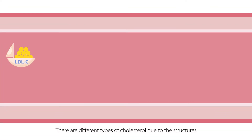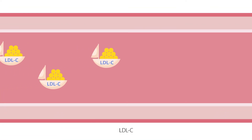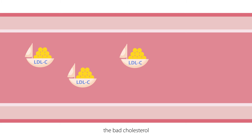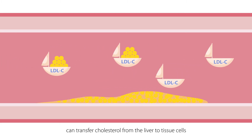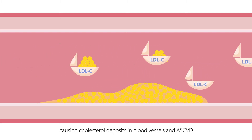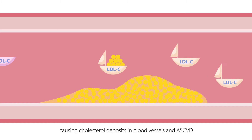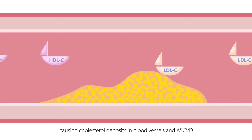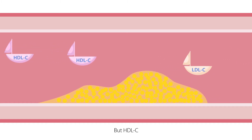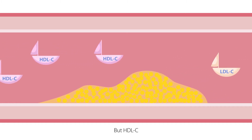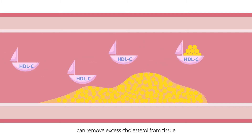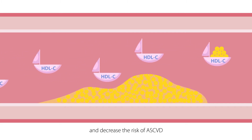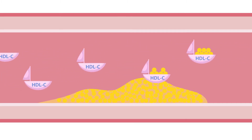There are different types of cholesterol due to their structures. LDL-C, the bad cholesterol, can transfer cholesterol from the liver to tissue cells, causing cholesterol deposits in blood vessels and ASCVD. But HDL-C, the good cholesterol, can remove excess cholesterol from tissue and decrease the risk of ASCVD.